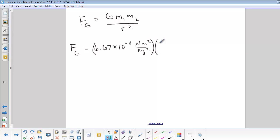M1 is 6 times 10 to the 24th kilograms. That's the mass of the Earth and then the mass of the moon is 7.3 times 10 to the 22nd kilograms.